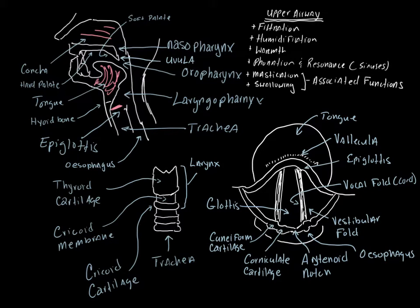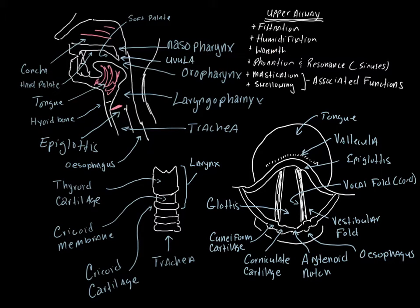I just want to do a quick overview of the respiratory anatomy and physiology. We're going to start at the upper airway. The primary job of the upper airway is filtration — it will humidify the incoming air and warm the incoming air. The primary jobs of the upper airway are filtration, humidification, and warmth.